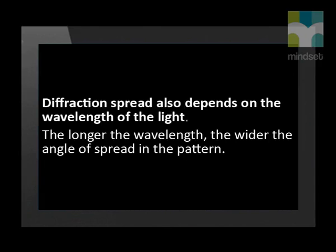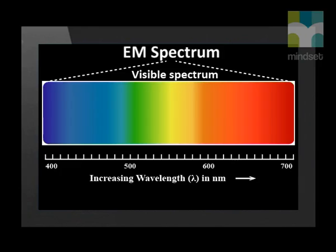But the angle of spread does not depend only on the width of the slit. Each color of light has a different wavelength. Well, we find that the spread of the diffraction pattern depends on the wavelength of the light also. You will remember from the electromagnetic radiation lessons that the visible spectrum of light ranges from red to blue and violet. Red light has a longer wavelength than blue light.